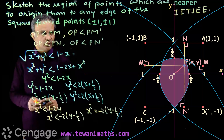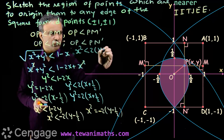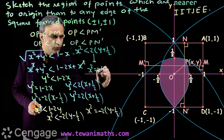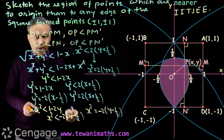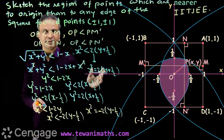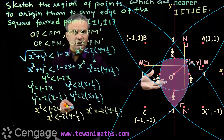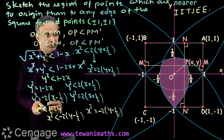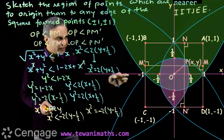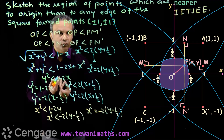From the last inequality OP less than PN', we get X squared less than 2 times (Y plus 1/2). Point P will lie in the interior region of the parabola X squared equals 2 times (Y plus 1/2), which has vertex at (0, -1/2) and intersects the X axis at (1, 0) and (-1, 0). This parabola opens upward because the coefficient is positive. Finally, the required region is the common region of the interior regions of all four parabolas.